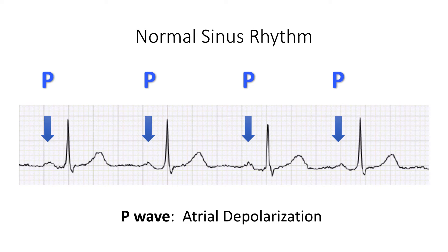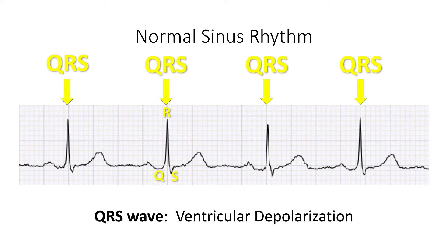If the patient is in normal sinus rhythm, then the P-wave of the atria precedes the QRS wave generated by the ventricles. A normal P-wave should be less than 2.5 millimeters in height in your limb leads, and the duration should be less than 0.12 seconds, or three little boxes, in duration.